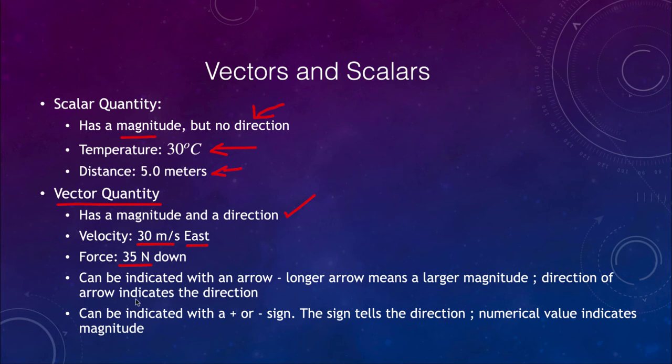So these can be indicated by arrows, for example, a longer arrow meaning a larger magnitude. So if we were looking at velocities, we could draw a velocity arrow for one velocity and we could draw a velocity arrow for a second velocity. And we would know just by looking at these that V2 is greater than V1. We know that they're in the same direction, but we know that the magnitude of V2 is greater than the magnitude of V1. So the longer arrow, the size of the arrow tells us the magnitude, the direction of the arrow tells us the direction.